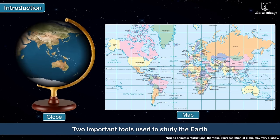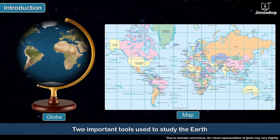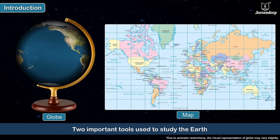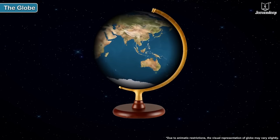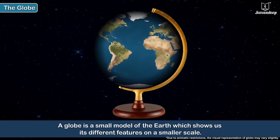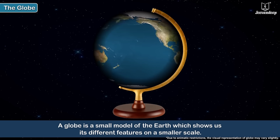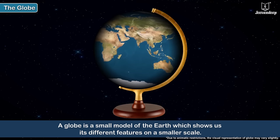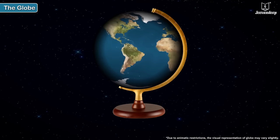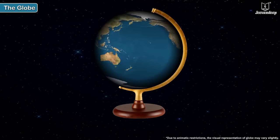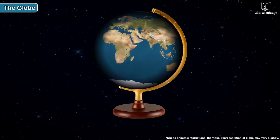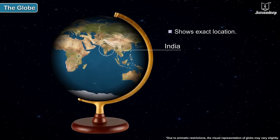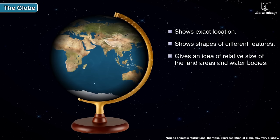Two important tools used to study the Earth are globes and maps. A globe is a small model of the Earth which shows us its different features on a smaller scale. A globe shows the exact location, shapes, and gives an idea about the relative size of all the land areas as well as water bodies on the Earth.